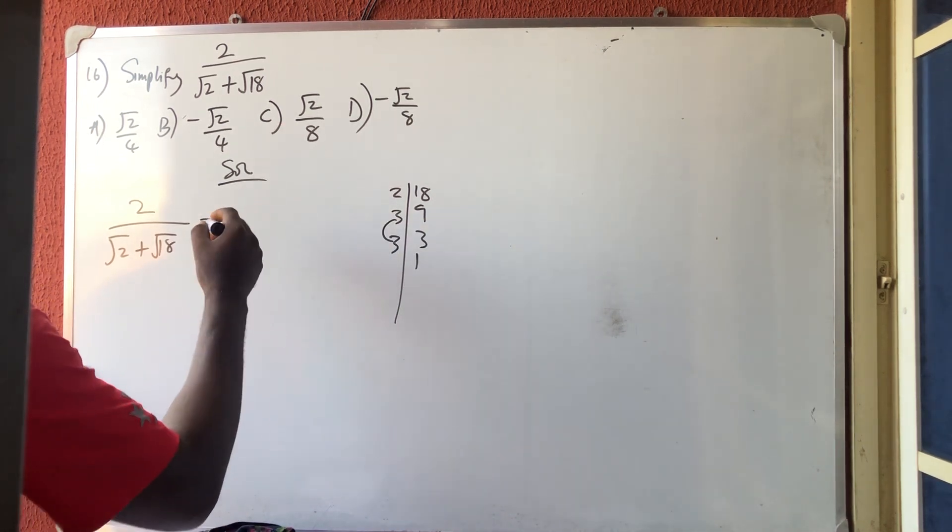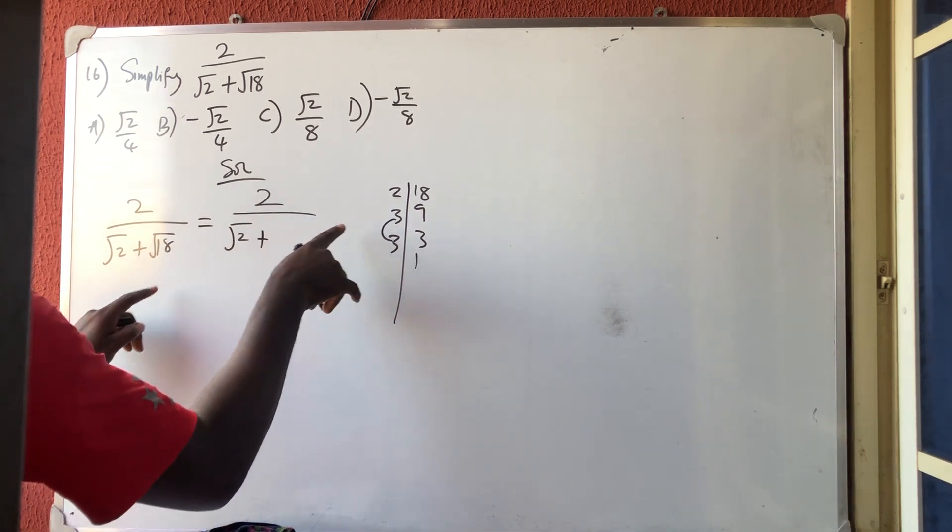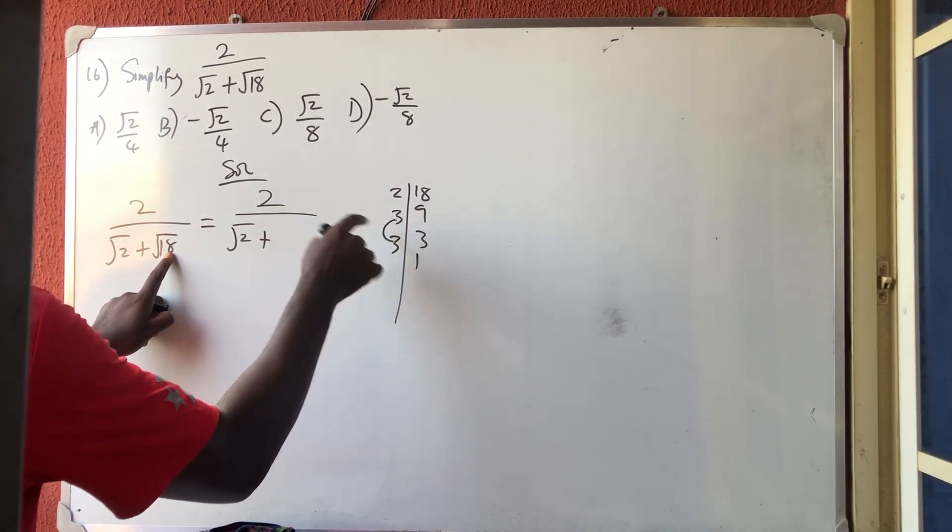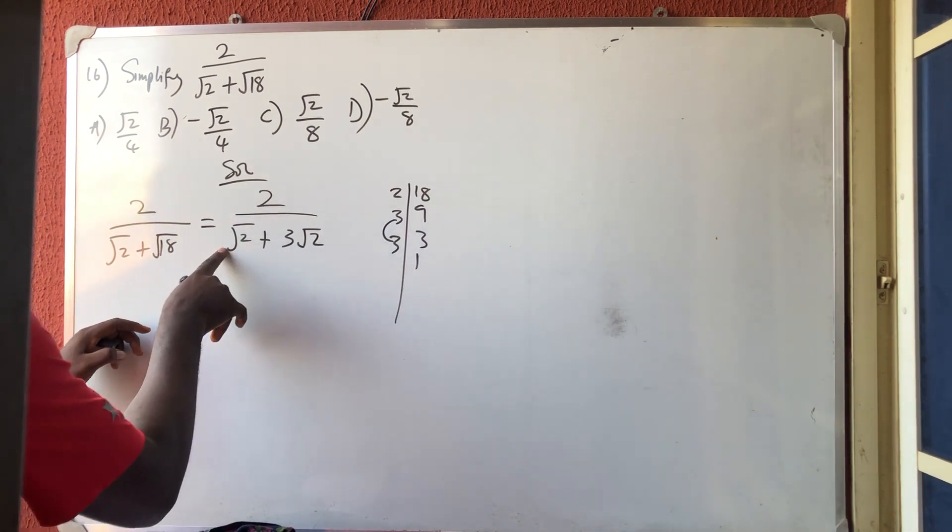If you are single, stay inside. So this is 2 over root 2 plus, now instead of writing root 18, 3 is double so take one of the 3 outside, but 2 that is single remains inside.